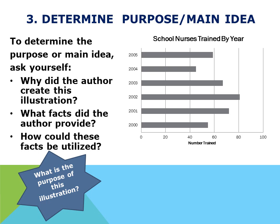In this step, you must determine the purpose or main idea. Take a few moments and scan the illustration. I want to point out the number of times we have reread the illustration. Rereading is a key strategy for thorough analysis. Thinking about the information from the title as well as the X and Y axis, we can tell this illustration determines the number of school nurses trained within an organization. This information is displayed by the number trained per year.